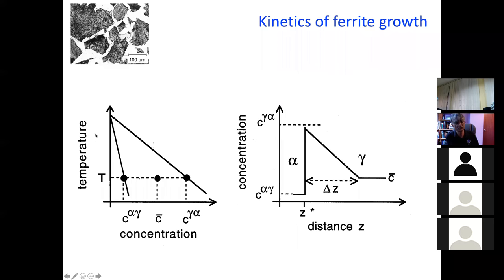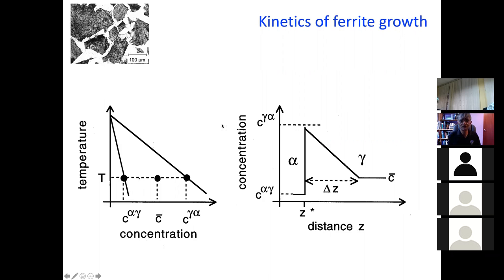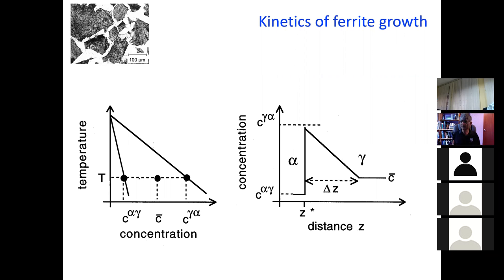This is the iron-carbon phase diagram — temperature versus concentration. Assuming we are transforming at a particular temperature T, the average composition of our alloy is C-bar. This is the equilibrium concentration in austenite in contact with ferrite, and this is the equilibrium concentration in ferrite in contact with austenite. While the ferrite is growing, we develop a concentration profile: the equilibrium composition of ferrite on one side, the equilibrium composition of austenite on the other, with the far-field composition assumed unchanged. I approximate this gradient as a straight line over a diffusion distance. Z* is the position of the interface — the thickness of the ferrite.